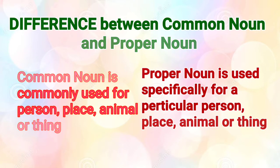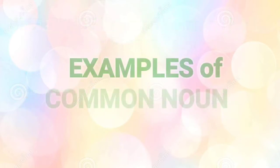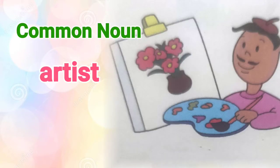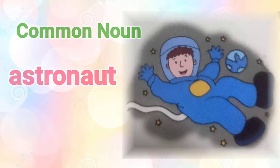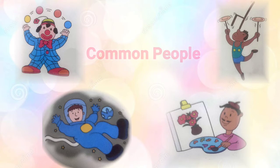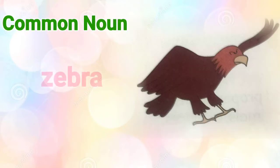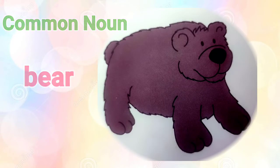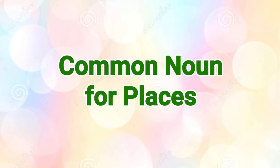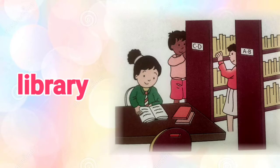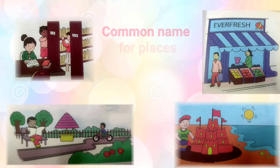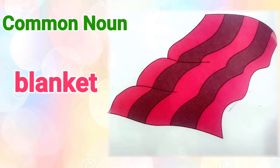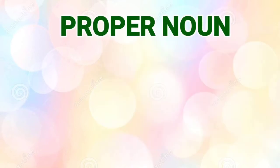Let's take some examples of common nouns. For example, a clown, an artist, an acrobat, an astronaut — these are all common names for people. The common names of animals are eagle, zebra, deer, bird, crocodile, and bear. The common names for places are shop, beach, library, and park. And the common names for things are basket, bucket, drum, cake, blanket, bed, and gate.